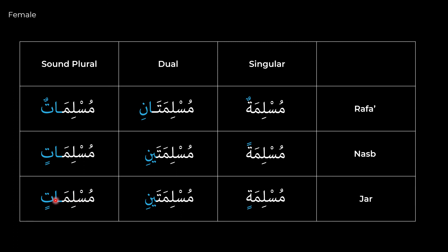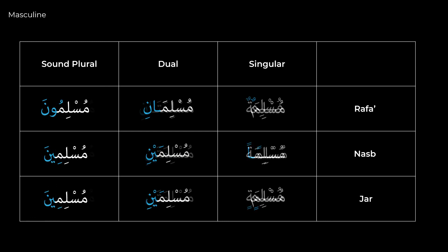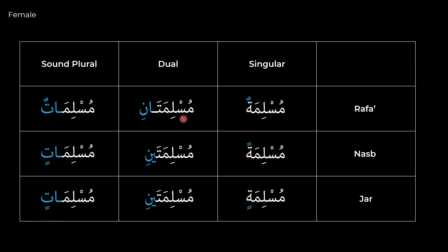That's pretty much status in a nutshell. It really just comes down to mastering these two charts and knowing when to use them. When you see a word that fits any of these patterns, you know exactly what its status is. As for what makes a word nasab, jar, or rafa, that's something we'll study in the coming lessons insha'Allah. For now we just wanted to establish the different statuses and how they look across different numbers and genders. Jazakumullahu khayran. Assalamu alaykum wa rahmatullah.